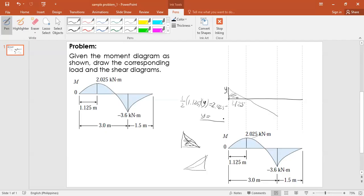So we can solve for y. Using your calculator, the value of y is 2.025 times 2 divided by 1.125. It's 3.6. So it's three point six.